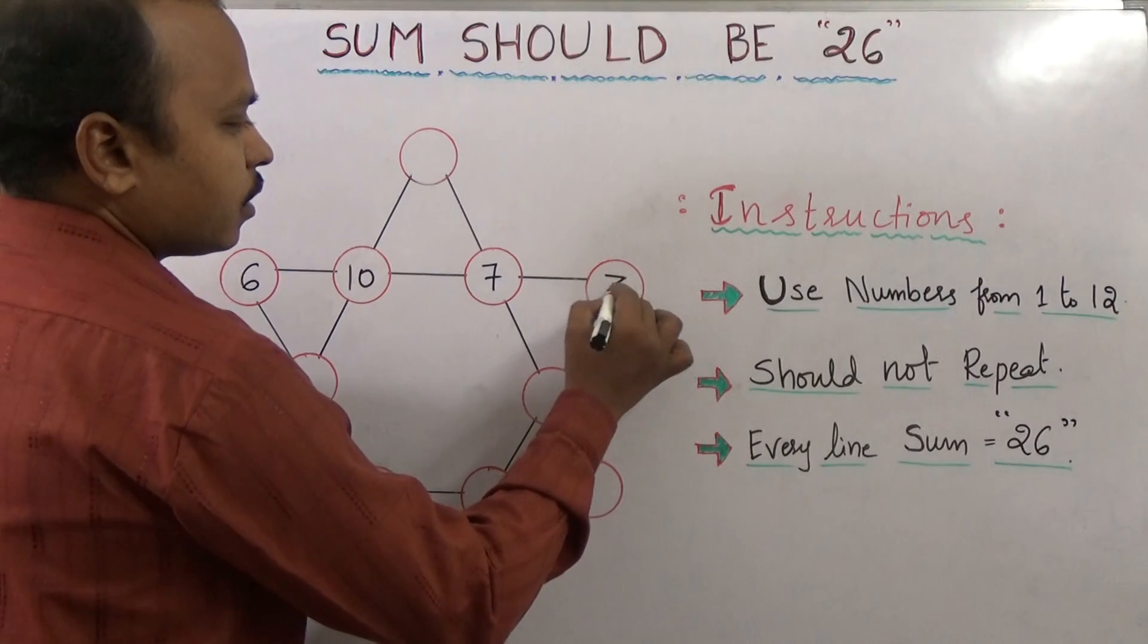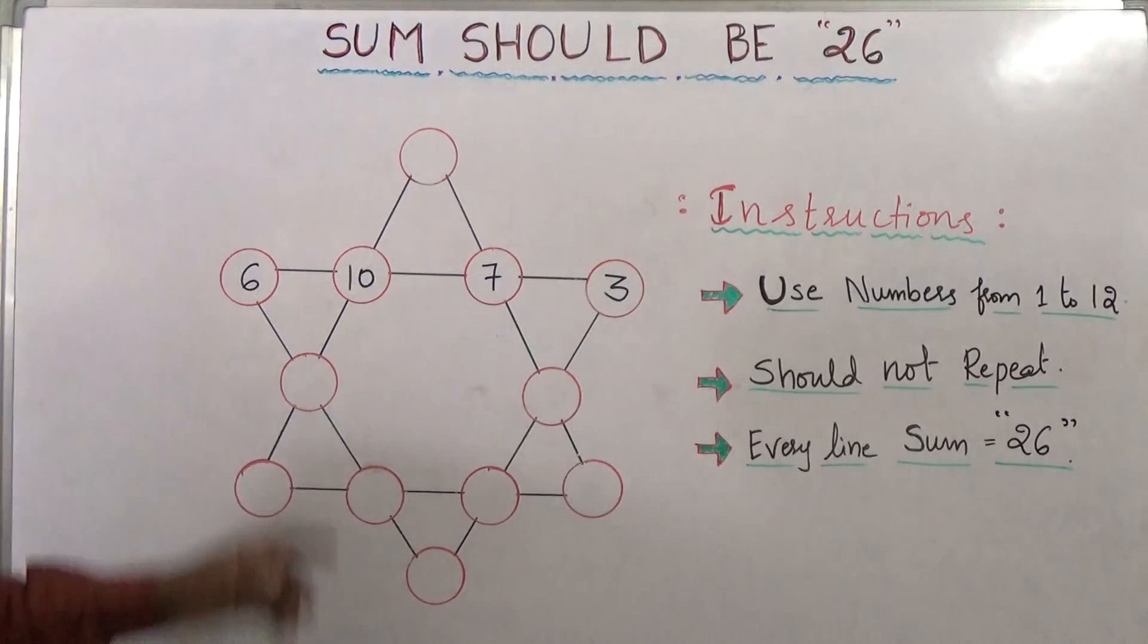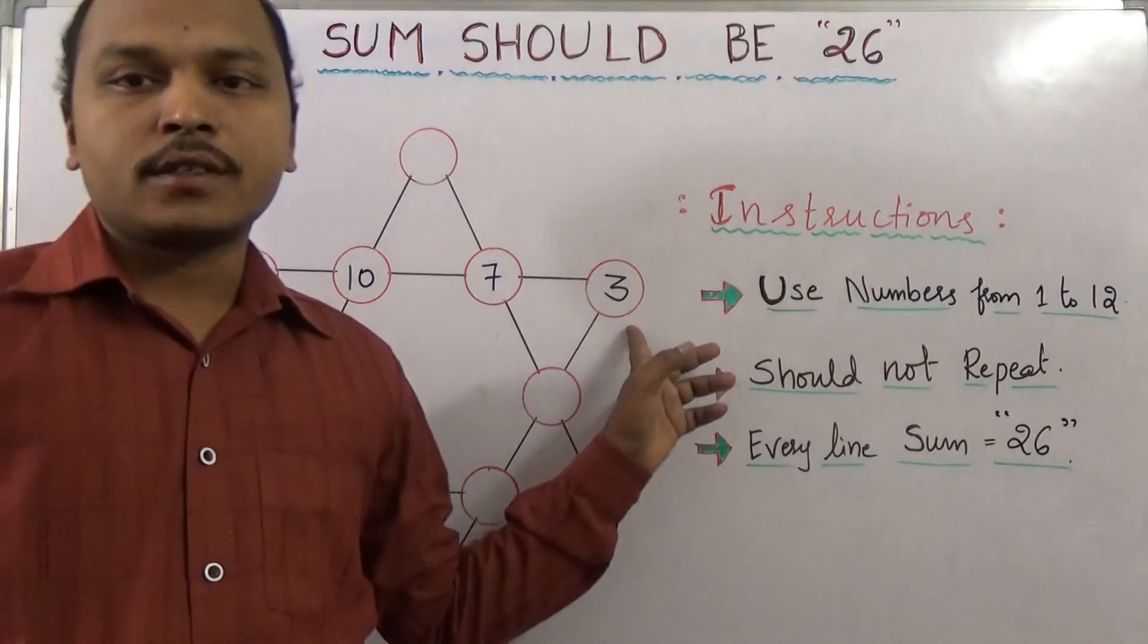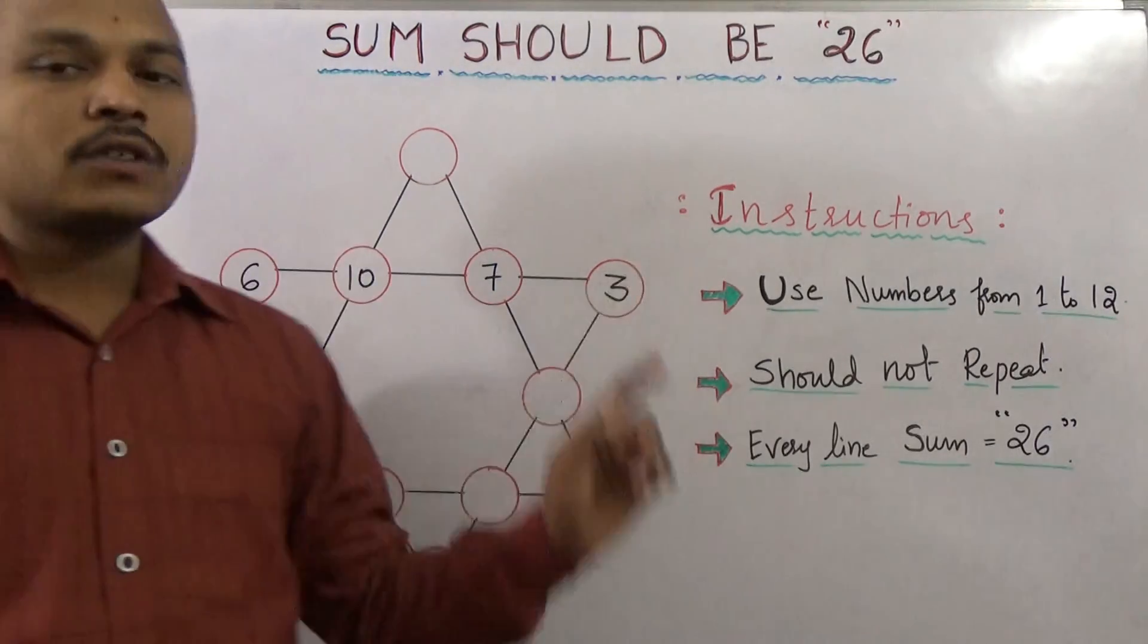6 plus 10 is 16, plus 7 is 23, and plus 3 is 26. This row sum is 26.